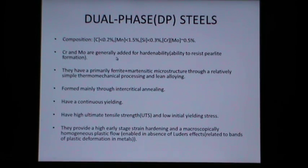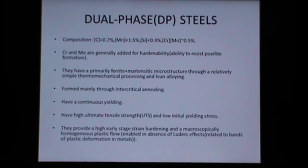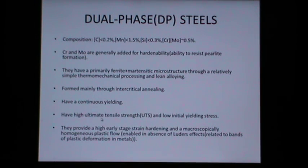Dual phase (DP) steels contain carbon less than 0.2 percent, manganese less than 1.5 percent, silicon less than 0.3 percent, and chromium and molybdenum approximately 0.5 percent combined. Chromium and molybdenum are added for hardenability — that is, the ability to resist pearlite formation. DP steels have a primarily ferrite plus martensite microstructure through relatively simple thermomechanical processing and lean alloying, formed mainly through intercritical annealing.